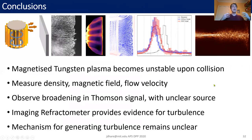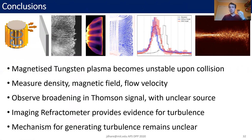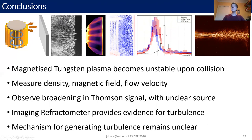To summarize: I've shown you a magnetized tungsten plasma colliding with a planar obstacle and becoming very unstable. We've been able to measure the density, the magnetic field, and the flow velocity within this plasma, and we've observed broadening in the Thomson scattering signal — though its source is unclear, it could be turbulence in the velocity field. I've also shown a new diagnostic, an imaging refractometer, which provides evidence for turbulence by looking at the spectrum of deflections of a probing laser beam passing through the plasma. The mechanisms for generating this turbulence are still extremely unclear — I gave three possibilities but we don't have any definitive answer yet, so I welcome any suggestions and questions. Thank you very much for listening.